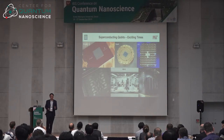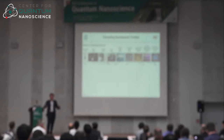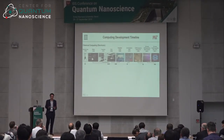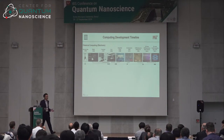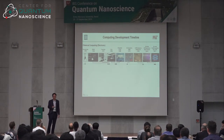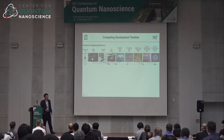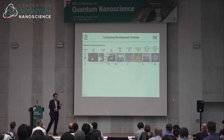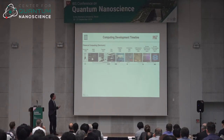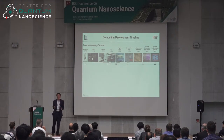What I'd like to do is take a step back and look at the history of classical electronic computing. The vacuum tube was invented in 1906 and was used for radio transceivers for about 40 years before we had the first vacuum tube-based computer, ENIAC. Around that time, Bell Laboratories invented the transistor, and about 10 years later we had a fully transistor-based computer called TX-0.